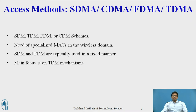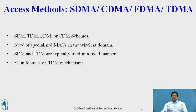As we know, there is the presence of hidden and exposed terminals, or near and far terminals. Because of these terminals, there is a need for specialized MAC in the wireless domain. SDM and FDM are typically used in a fixed manner, where certain space or frequency is assigned for a longer period of time. The main focus is on TDM, which allows time allocation on demand and in a distributed fashion.